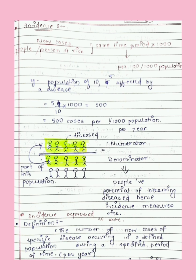In the diagram, the five affected people are highlighted in yellow — they were part of the population that is the denominator. This tells us about people who have the potential of becoming diseased; hence, incidence measures risk. The formula is the same as a rate, except that we detect new affected individuals, and it is expressed as a rate.